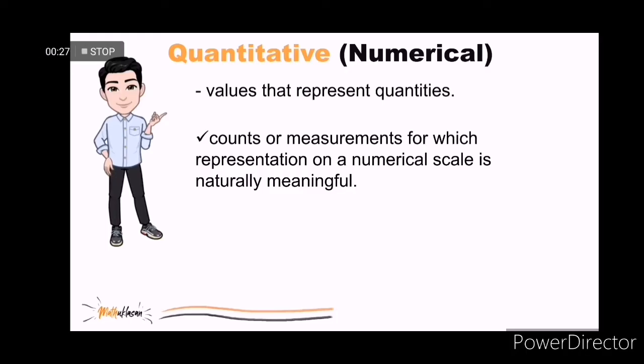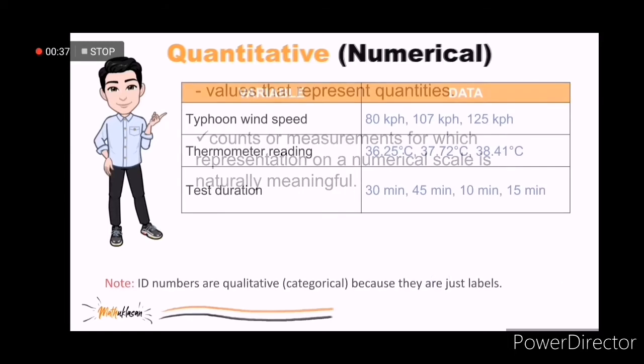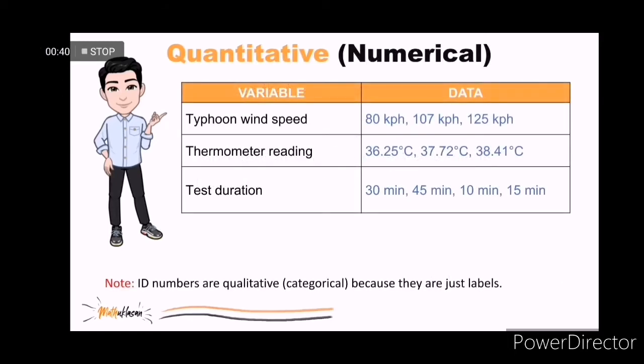While quantitative values represent quantities, counts, or measurements for which representation on a numerical scale is naturally meaningful. They usually come from measuring tools such as typhoon wind speed, thermometer reading, and test duration.